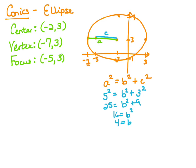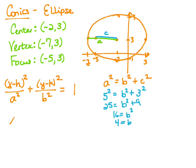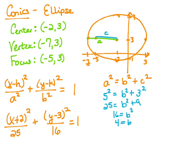Now we need an equation. Our equation is going to be in the form (x minus h) squared over a squared plus (y minus k) squared over b squared equals 1. The a goes with the x because our ellipse is going horizontally. My center is at (-2, 3), so I have (x plus 2) squared and (y minus 3) squared. My a value is 5, so this is over 25. My b value is 4, so this is over 16. That's our equation for this ellipse.